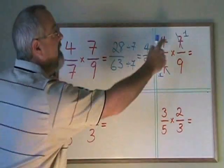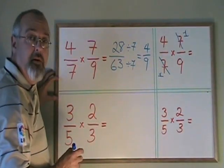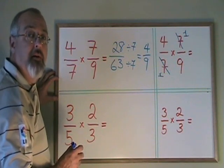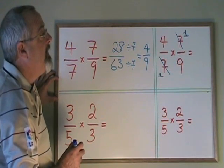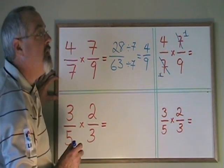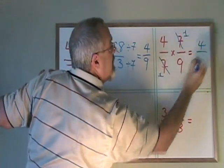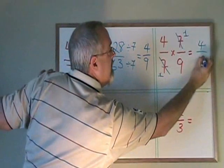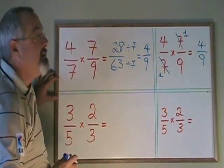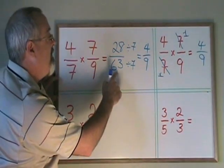It doesn't matter that the 7 on top is not directly above the 7 on the bottom — they don't have to be in the same fraction. The rule is just that one has to be on the top and the other on the bottom. Now I have 4/1 times 1/9, and when I multiply, 4 times 1 is 4 and 1 times 9 is 9. Because I canceled as much as I could, this answer does not have to be reduced the way I did the first time.